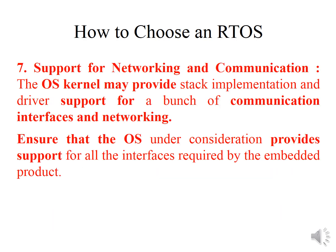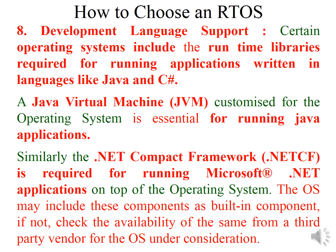The seventh functional requirement is support for networking and communication — choose an OS whose kernel provides stack implementation and driver support for communication interfaces and networking. The final functional requirement is development language support. Operating systems include runtime libraries for languages like Java and C#. A JVM is required for Java applications, and the .NET Compact Framework is required for .NET applications, so choose an OS that includes these components.